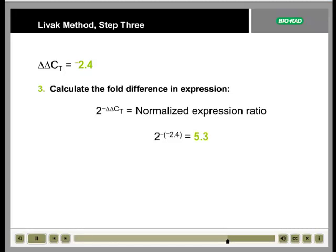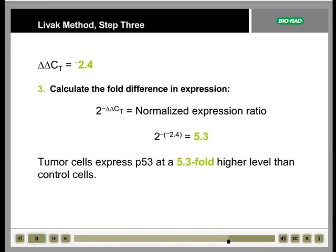In this example, the equation yields a value of 5.3, indicating that tumor cells express P53 at a 5.3-fold higher level than the control cells. Negative values indicate a difference in expression that is lower than the control sample.